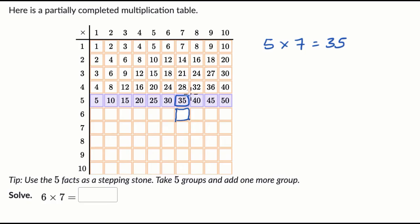Seven times three is 21. Seven times four is 28. Seven times five is 35. So every time we're just adding seven when you go down this column. So if you want to figure out what six times seven is — or what seven times six is — you just have to add seven more right over here.